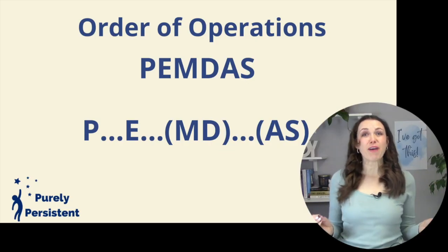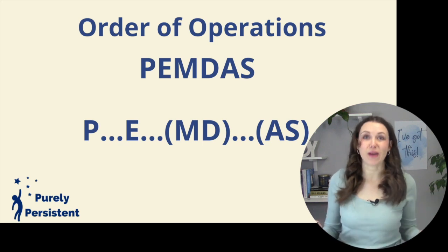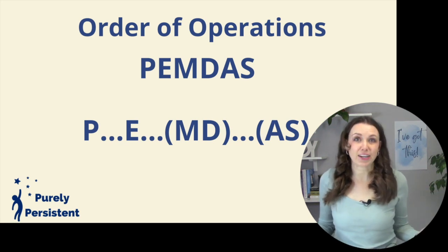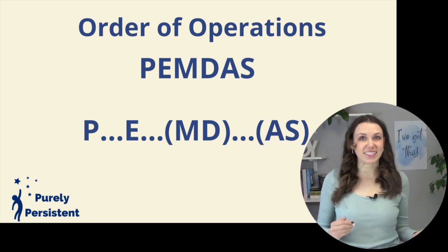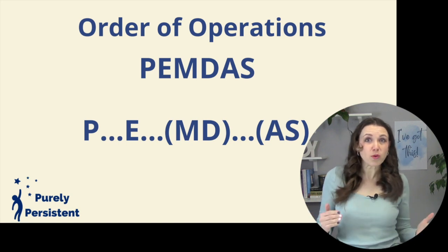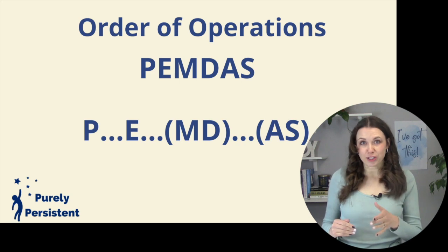So the order of operations is something that people actually often get wrong, even though there's a nice acronym. So people remember it as PEMDAS, or please excuse my dear Aunt Sally. So the P is parentheses followed by exponents, multiplication, division, addition, subtraction.